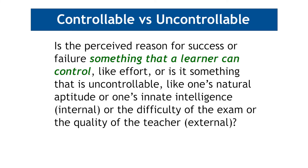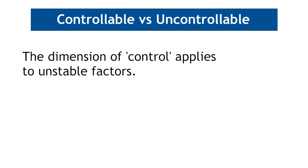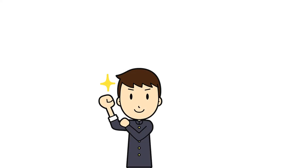Now let's look at the third dimension: control. Is the perceived reason for success or failure something that a learner can control, like effort? Or is it something uncontrollable, like one's natural aptitude or innate intelligence, which are internal factors, or the difficulty of the exam or the quality of the teacher, which are external factors? If something is stable — in other words, unchangeable — that automatically means we cannot control it. Therefore, this dimension of control only really applies to unstable factors.